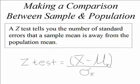Now it's time to make that comparison between our sample mean and the population mean. We're going to use a z-test. What a z-test tells us — the essence of a z-test — is the number of standard errors that our sample mean is away from the population mean. The larger the z-test result, the more standard errors the sample mean is away from the population mean.